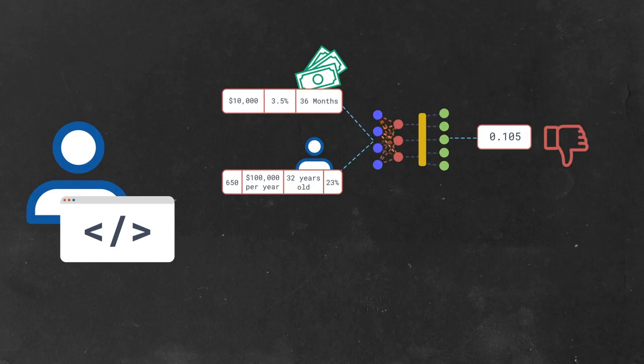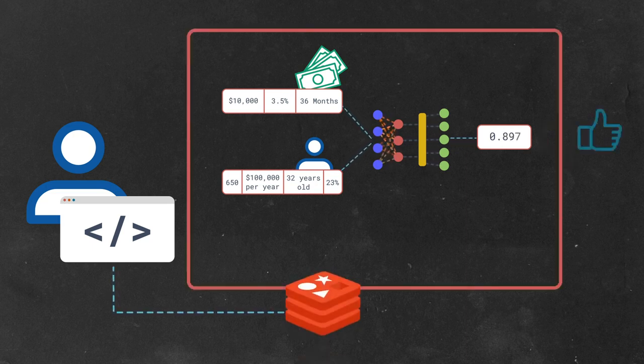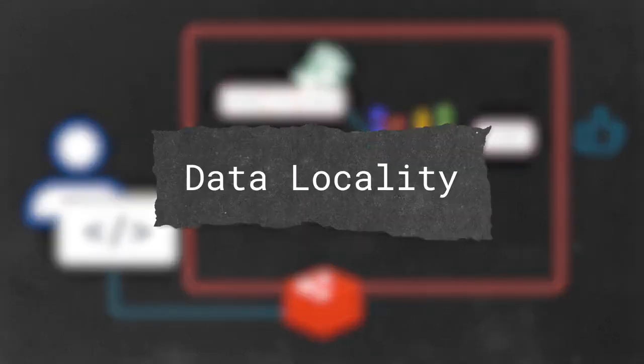But, and this is important, Redis is a data store, an in-memory data store. And if our customer's banking records are already in Redis, the retrieval step can happen within Redis. No network, no disk, just memory. This is called data locality, and it gets us a huge performance boost.